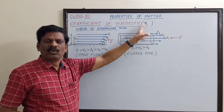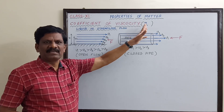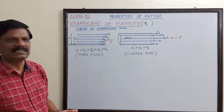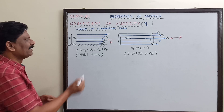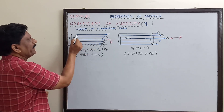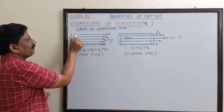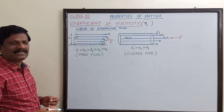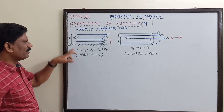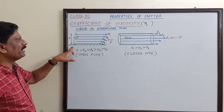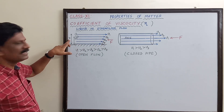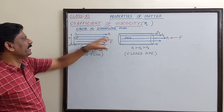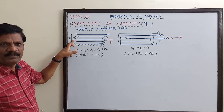Now we want to get an expression for the coefficient of viscosity. For that, consider any two layers — for example, the first layer and the second layer. From a fixed point, the top layer is at distance x1 and the second layer is at distance x2.